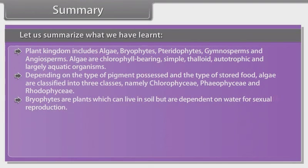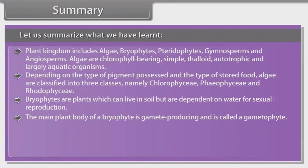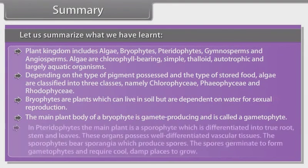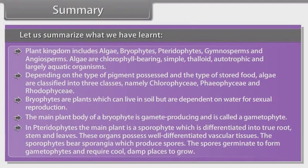Bryophytes are plants which can live in soil but are dependent on water for sexual reproduction. The main plant body of a bryophyte is gamete producing and is called gametophyte. In pteridophytes, the main plant is sporophyte which is differentiated into true root, stem and leaves. These organs possess well-differentiated vascular tissues. The sporophytes bear sporangia which produce spores. The spores germinate to form gametophytes and require cool, damp places to grow.